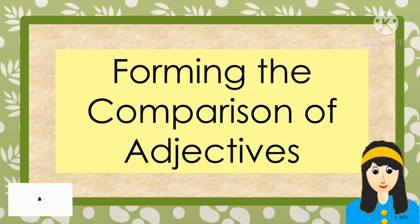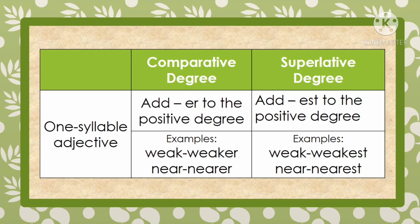Let us study the rules for forming degrees of comparison. For one-syllable adjectives, to form the comparative degree, add -er to the positive degree. Examples: 'weak' becomes 'weaker'; 'near' becomes 'nearer.' For the superlative degree, add -est to the positive degree. Examples: 'weak' becomes 'weakest'; 'near' becomes 'nearest.'